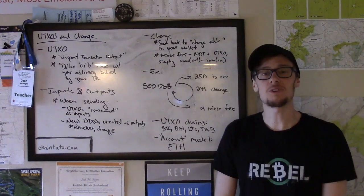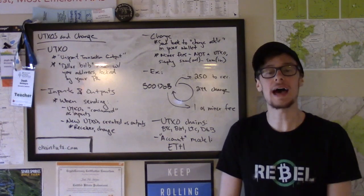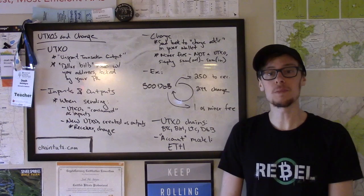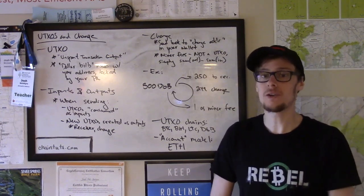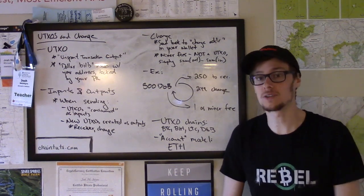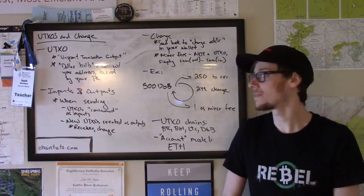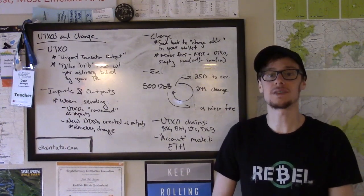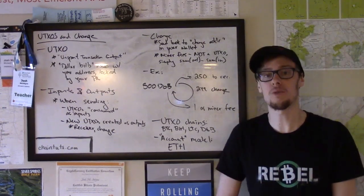Hey everyone, this is Josh with another Bitcoin and blockchain tutorial available at ChainTuts.com. Today we're going to be talking about understanding transactions by understanding the concept of UTXOs, how transactions are constructed with inputs and outputs, and how change works. Let's get started by first understanding the concept of a UTXO, or unspent transaction output.